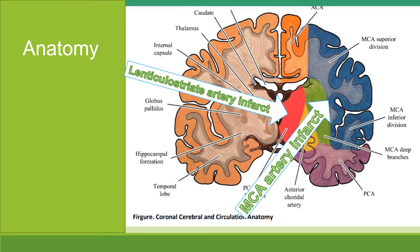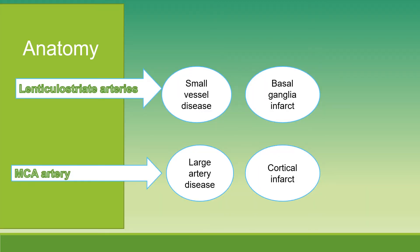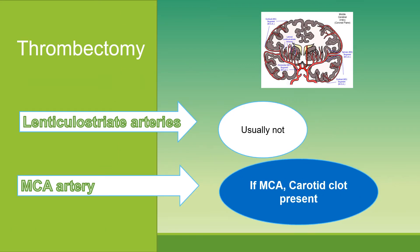When there's a stroke, the lenticulostriate artery would cause stroke in the basal ganglia area, and the MCA artery would cause a cortical stroke in the left hemisphere. Thrombectomy is usually not indicated for small vessel disease but for MCA artery thrombosis. If there is a clot seen at the MCA or carotid artery, thrombectomy may be helpful.